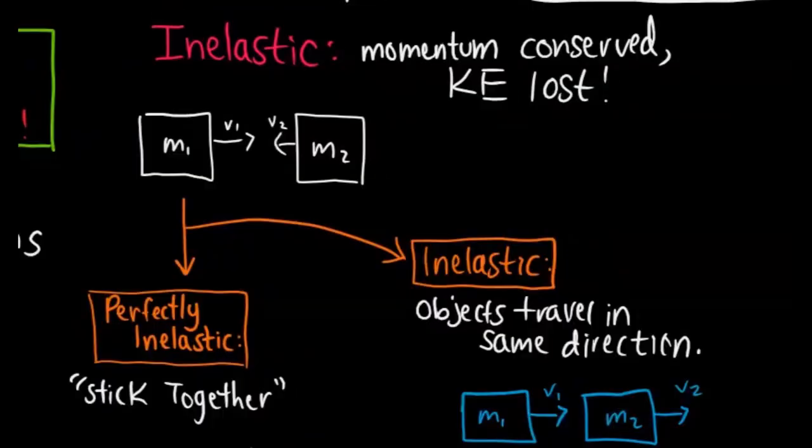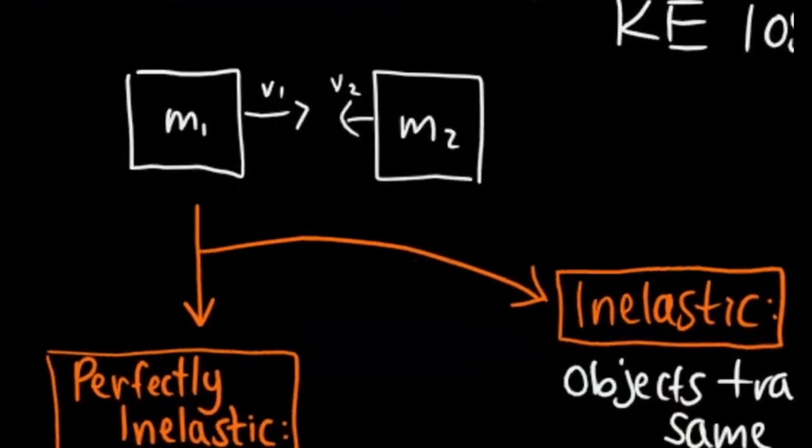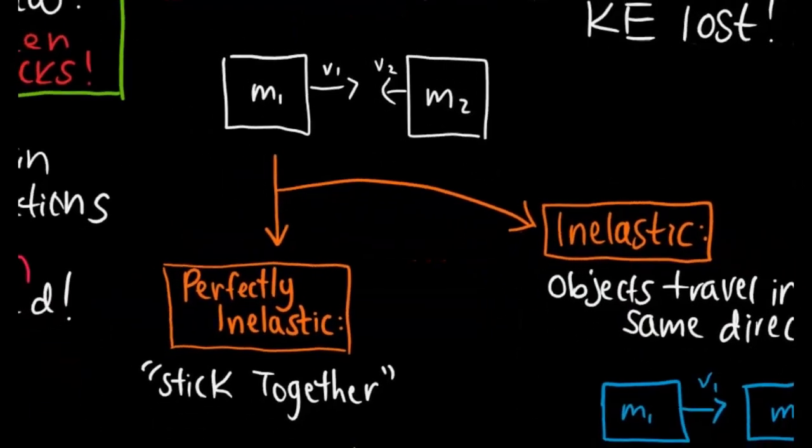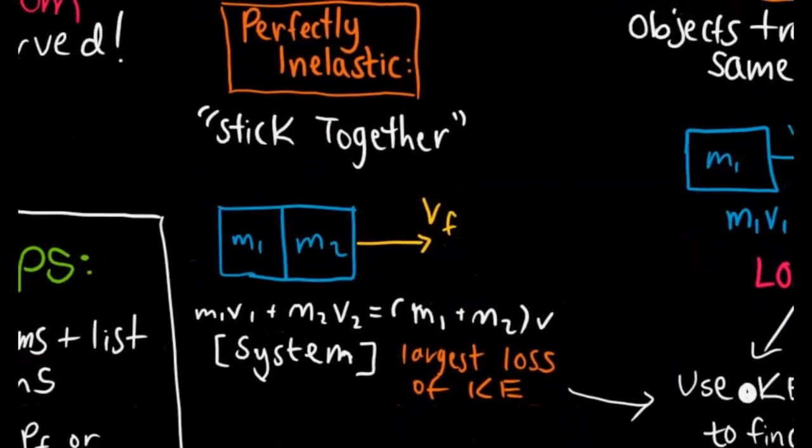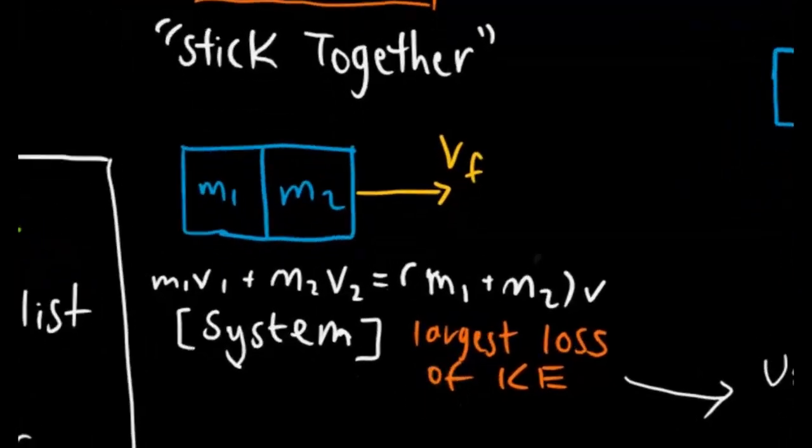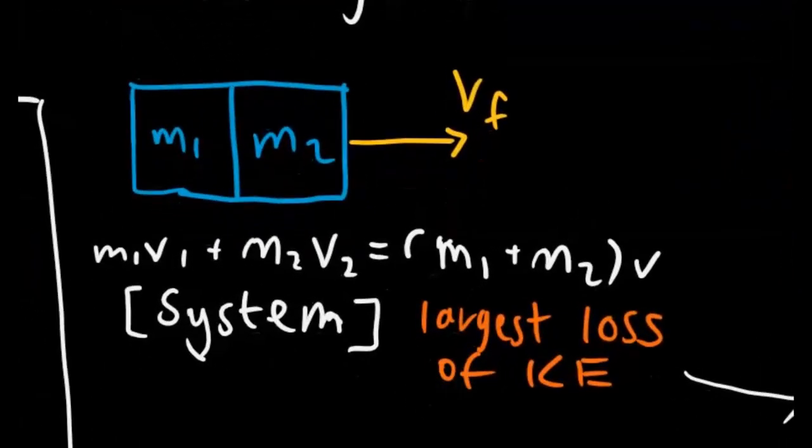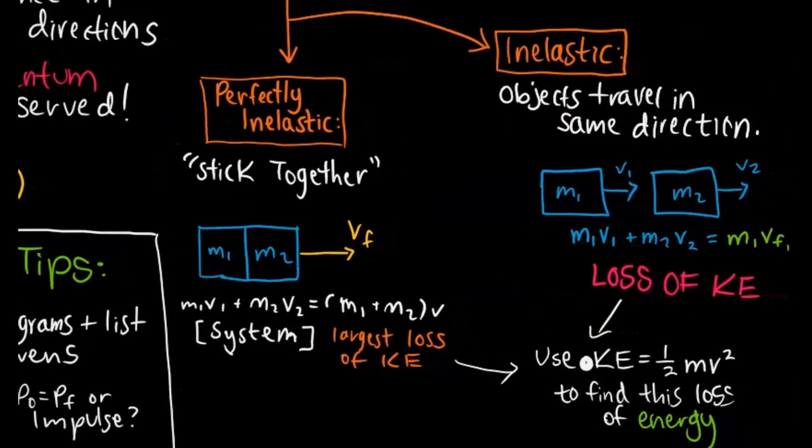The second type of collision we have is inelastic. Inelastic collisions where momentum is still conserved, but the kinetic energy is lost. Let's say we have two masses coming towards each other. We're going to have what is either perfectly inelastic, so they're going to stick together. This results in the largest loss of kinetic energy. When we set up our conservation of momentum equation, we have M1 times V1 plus M2 times V2 equivalent to M1 plus M2 times V.